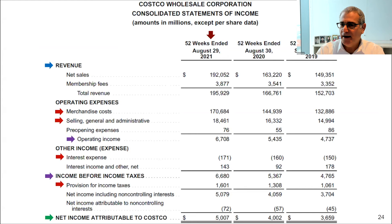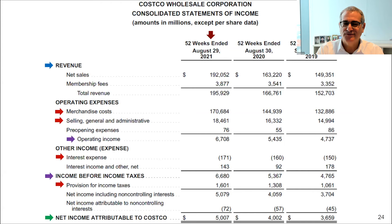The income statement is another major statement. It starts with revenue — the top line — and ends with net income for the period. In between, we have four major expense line items: cost of goods sold, selling general and administrative, interest, and income taxes. Essentially any company will have these expense line items.